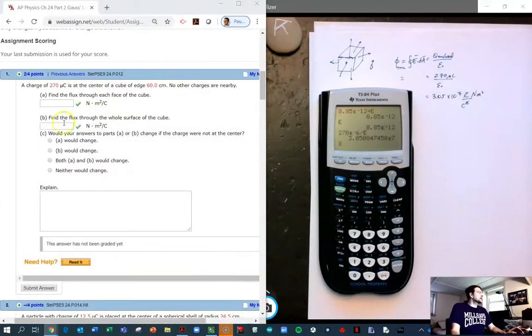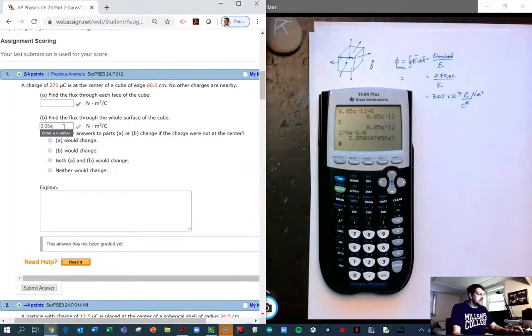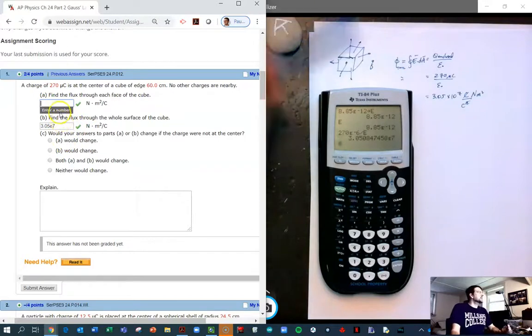And so we type this number into the total flux, 3.05 E7. And we can check our answers. I've already checked it. It's correct. I'm sorry. I was going to do it one at a time and I jumped the gun.